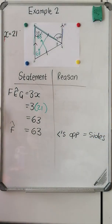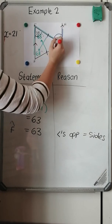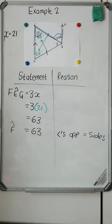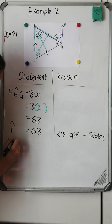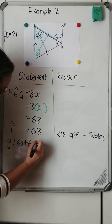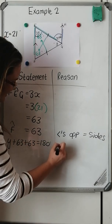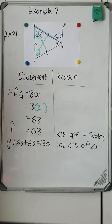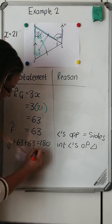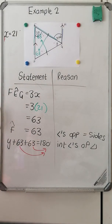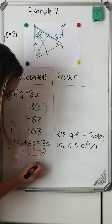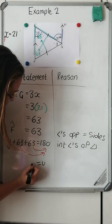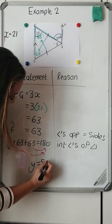Now it's easy to solve for y because I've got three interior angles and I have two of them. So y plus 63 plus 63 should give me 180 degrees, because of interior angles of a triangle. Solving for y: subtract both 63s from 180. 180 minus 63 minus 63 is 54. So y is equal to 54 degrees.